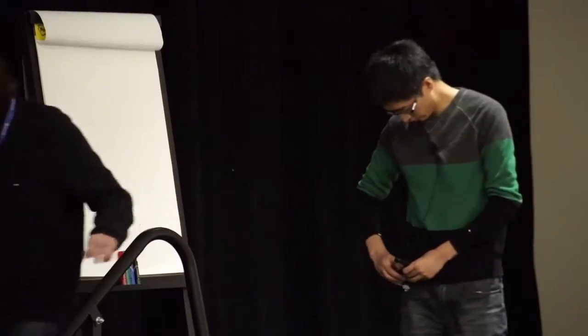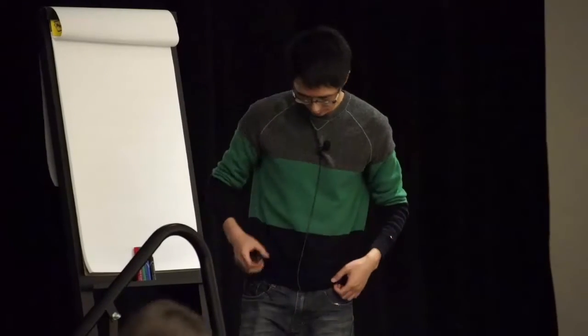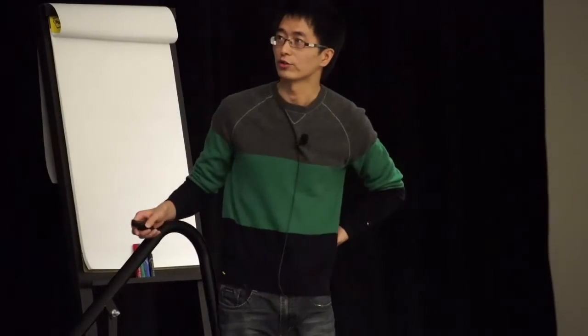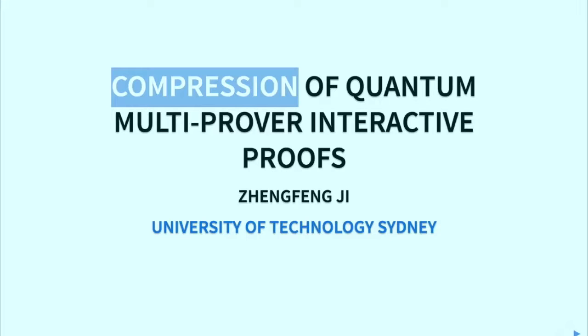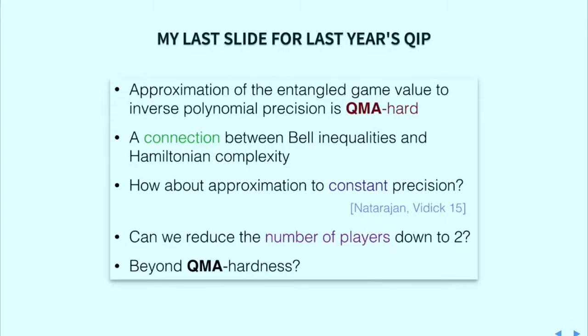Hi. We're ready to start our second talk for this session. It will be about compression of quantum multi-prover interactive proofs by Zheng Fengqi. I'll start with my last slide from last year's QIP, where I proved QMA hardness for entangled games. The open problem I asked is whether we can go beyond QMA, and this will be the central topic of today's talk.